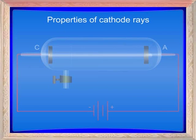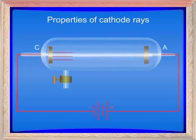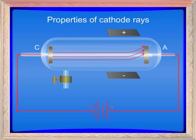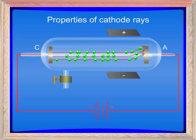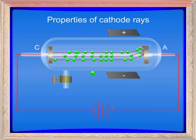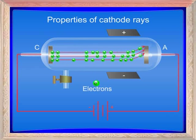Five, the rays are deflected by an electric field. The rays deflect towards the positive electric field, which shows that cathode rays carry negative charges and are known as the stream of electrons.